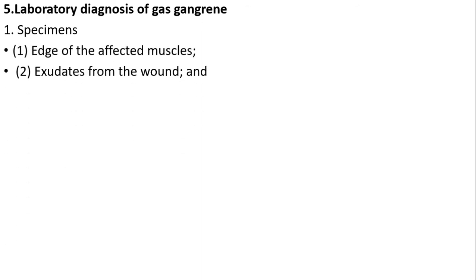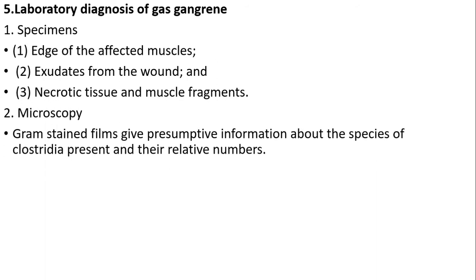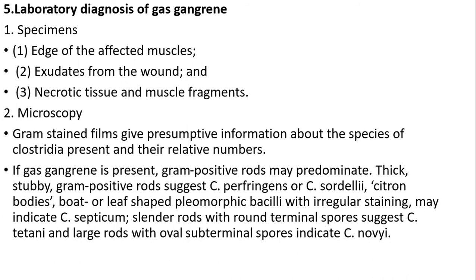Laboratory diagnosis of gas gangrene: specimens include the edge of affected muscles, exudates from wounds, necrotic tissue, and muscle fragments. For microscopy, Gram-stained smears give presumptive information about species of clostridia present and their relative numbers. If gas gangrene is present, Gram-positive rods may predominate. Thick, stubby Gram-positive rods indicate Clostridium perfringens or Clostridium septicum. Citron bodies — boat- or leaf-shaped pleomorphic bacilli with irregular staining — may indicate Clostridium septicum.